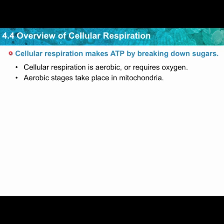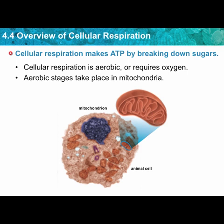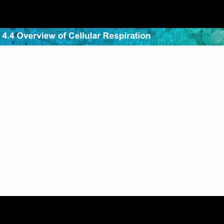In a cell, you've got many mitochondria because a lot of ATP is needed. It's a special area of the cell with many folds and tucked-in places for special enzymes to facilitate the process of breaking glucose down into ATP, carbon dioxide, and water. Glycolysis must take place first.